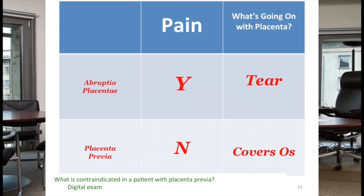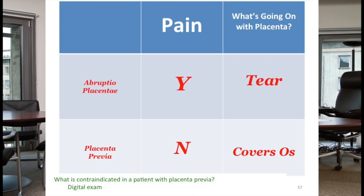Compare and contrast abruption placentae and placenta previa. Abruptio placentae — "abrupt" tear, it hurts; there is pain with a placental tear. Placenta previa — no pain; the placenta is covering the cervical os. Contraindications in placenta previa include intercourse and digital exam.